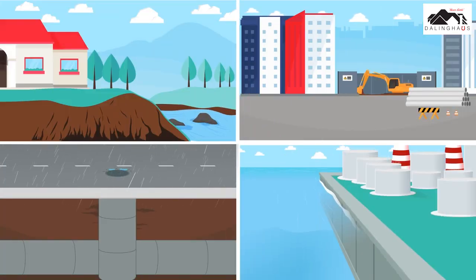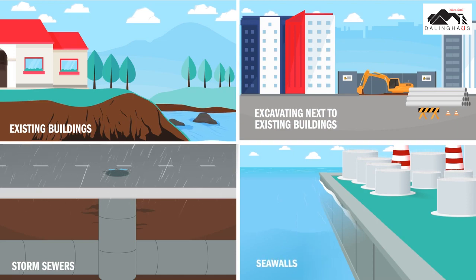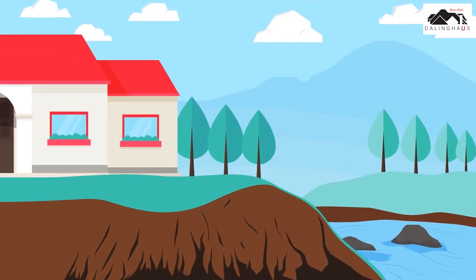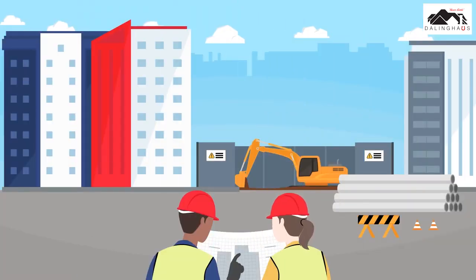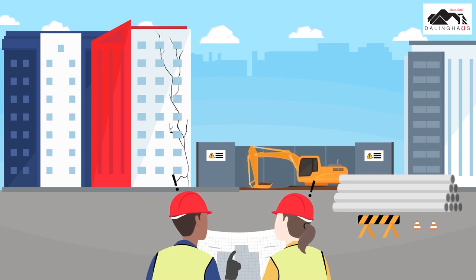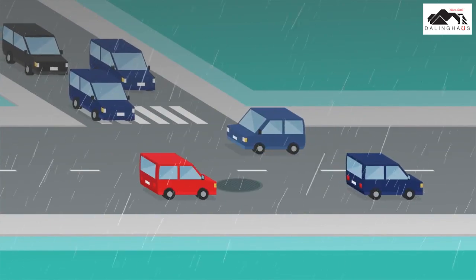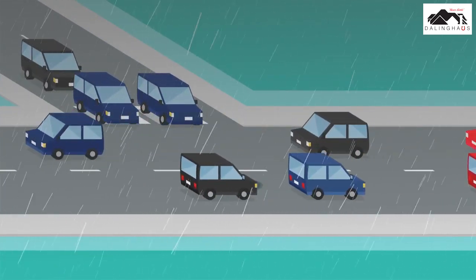Here are the common situations where unstable soil can be a problem: existing buildings, excavation next to existing buildings, storm sewers, and seawalls. Weak soil under any structure or slab increases the risk of settling and structural damage. Excavating next to a building can weaken the soil that supports the foundation, potentially causing structural damage.